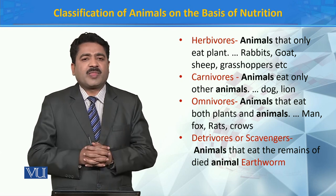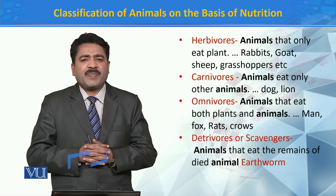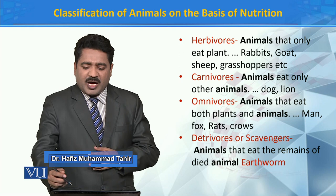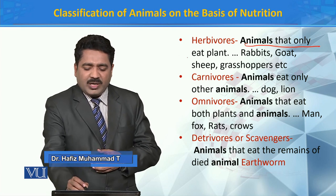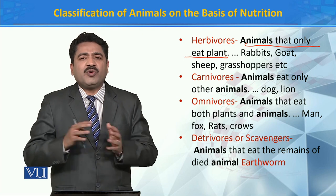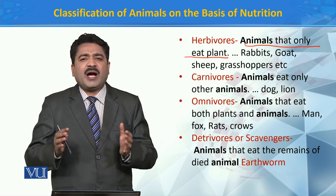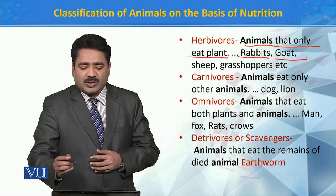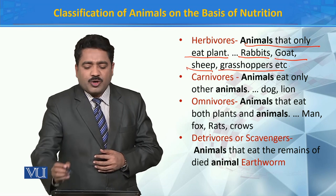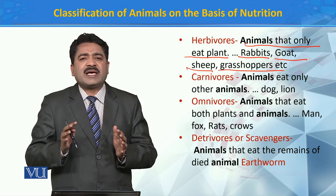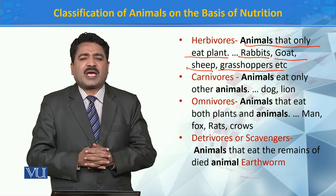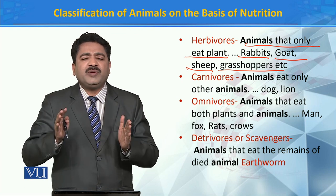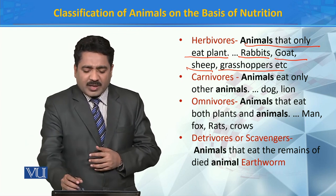and we have Detritivores. Now let's first talk about Herbivores — what are Herbivores? Herbivores are the animals that only eat plants; they feed only on plant matter. For example, rabbit, goat, sheep, grasshoppers — these are all animals that feed on plant matter. Such animals are called Herbivores.